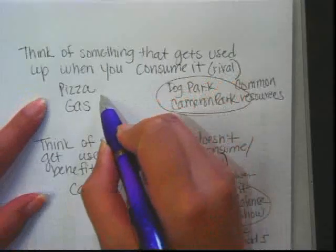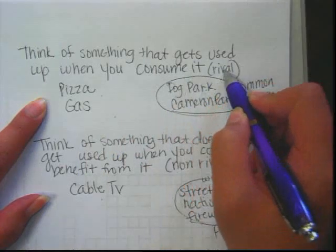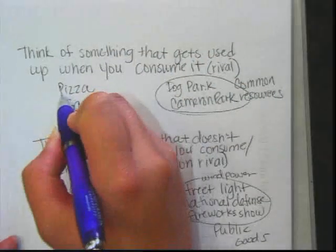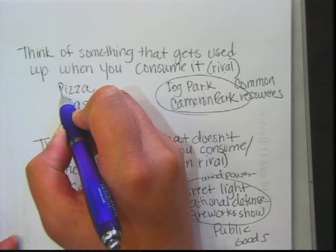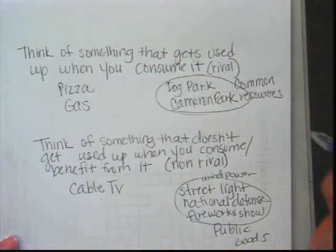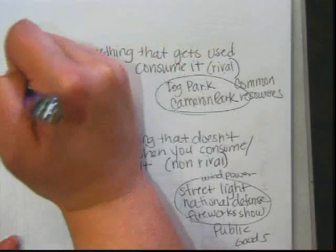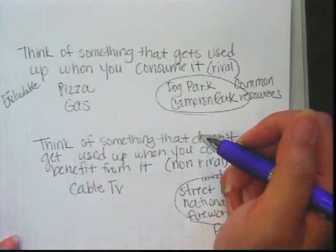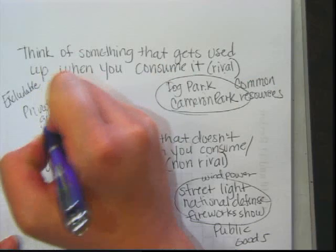Think of food — it's the easiest example of something that gets used up when you consume it. Does Papa John's give you your pizza before you've paid? No. So pizza is rival and excludable, and we call this a private good.